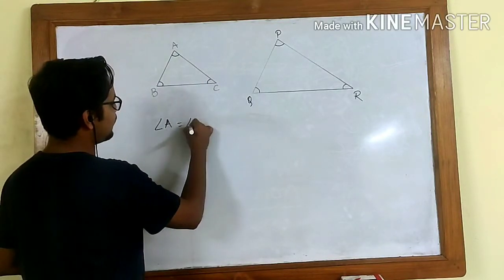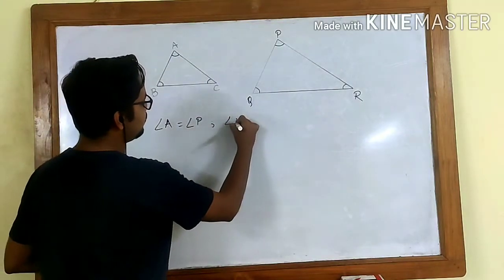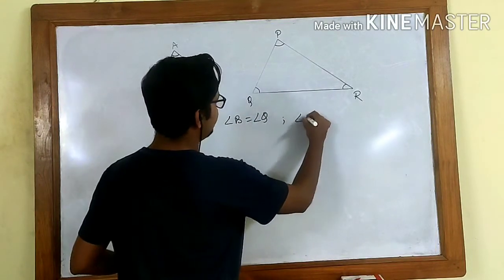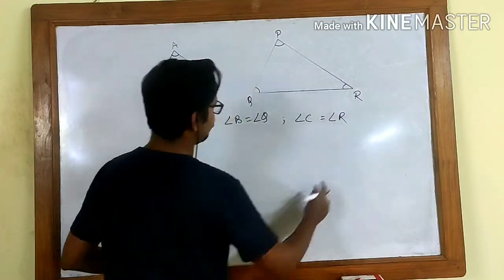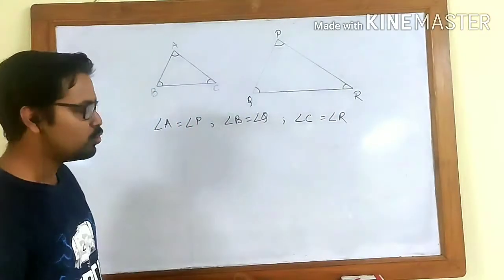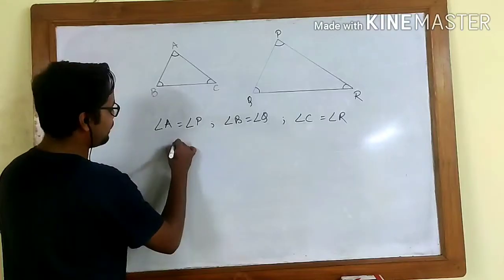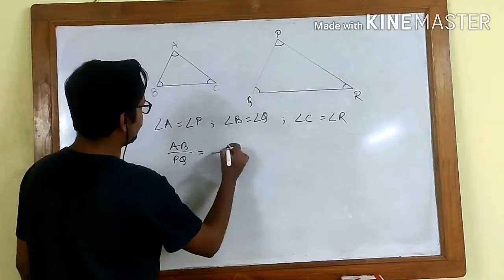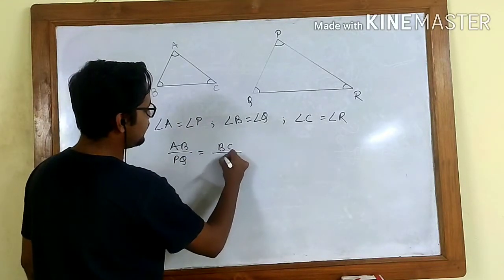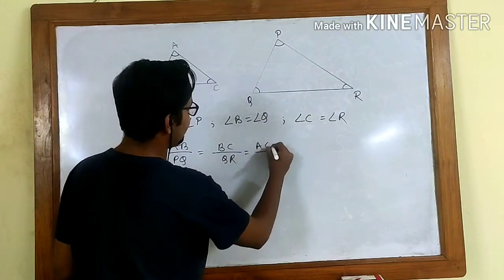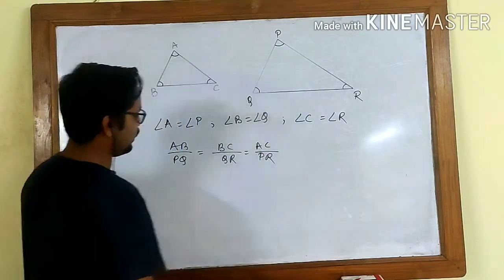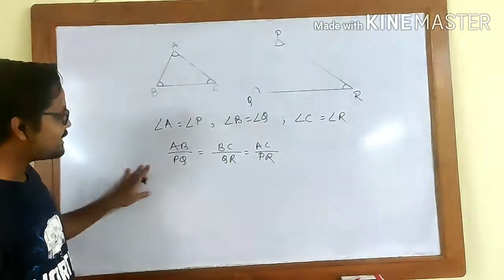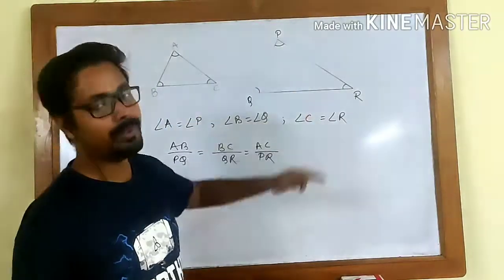Along with that, the ratio of AB to PQ, the ratio of BC to QR, and the ratio of AC to PR must all be equal. If these corresponding angles are equal and the ratios of the corresponding sides are equal, then the two triangles will be similar.